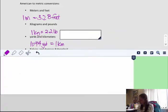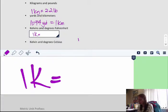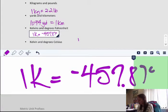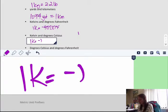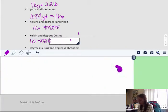Kelvins and degrees Fahrenheit. Kelvin is another SI unit for temperature. One Kelvin is negative 457.87 degrees Fahrenheit. Kelvin and degrees Celsius: one Kelvin is negative 272.15 degrees Celsius.